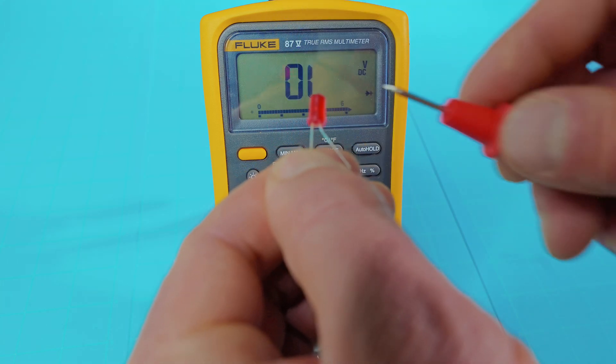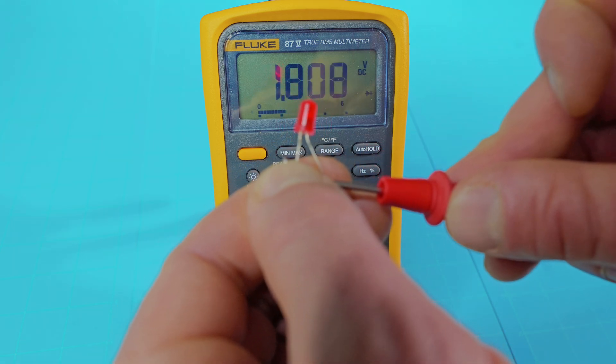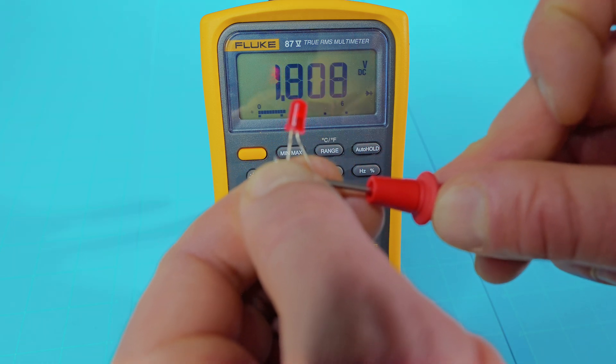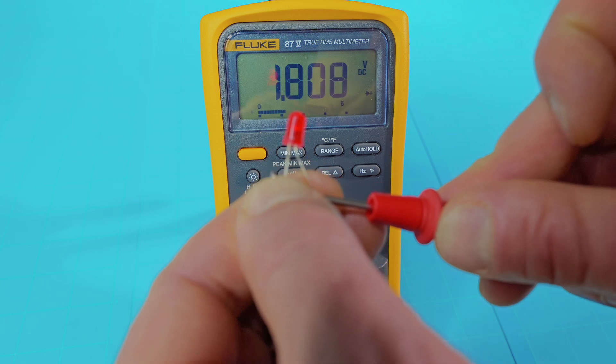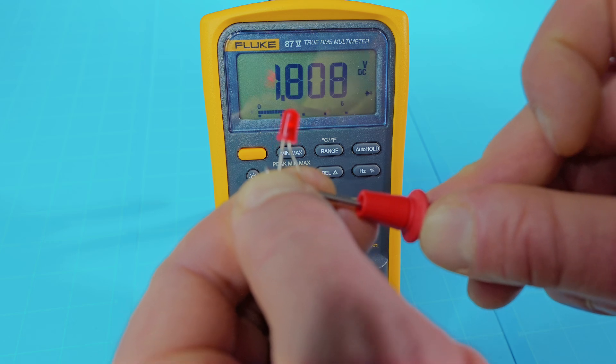But again, with the shorter lead on the black multimeter lead and the longer on the red, it will light up there and give you a DC voltage across that LED light. Now, the DC voltage will vary with the size of your LED. So don't worry about exact numbers if yours doesn't match mine.